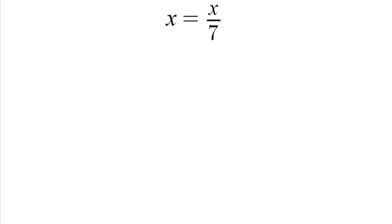So in order to solve for this, the first thing we're going to do is multiply both sides of this equation by 7. We're doing that so that we can cancel out the denominator of our x over 7.